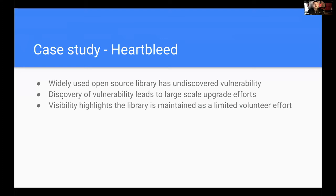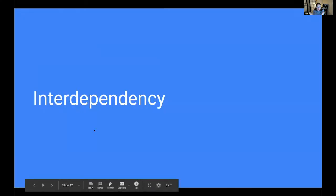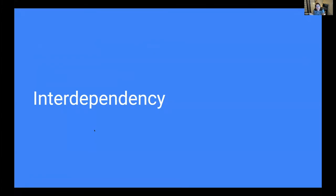Heartbleed — there is a widely used open source library with an undiscovered vulnerability that lay dormant for a couple of years. Discovery of the vulnerability led to a large-scale upgrade effort, hundreds of thousands of public web servers that needed to get updated. The process of digging into the problem highlighted that the library was largely volunteer maintained — famously by two guys named Steve. Of the three cases, this is probably closest to a sustainability problem in that this is a case of interdependency. This might have been discovered if we had applied more resources — time, money, or development work — on trying to find the security vulnerability. It's also possible it might not have been, so this falls into a bit of a gray area.